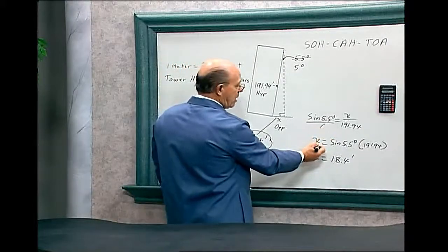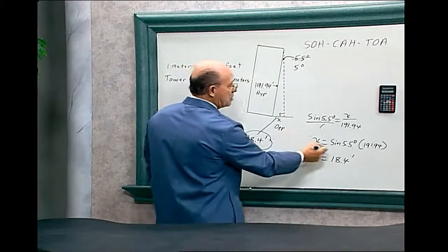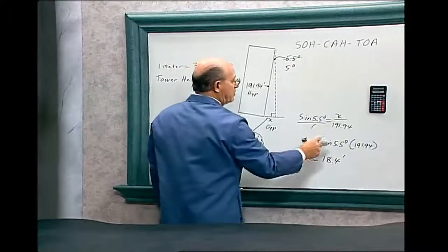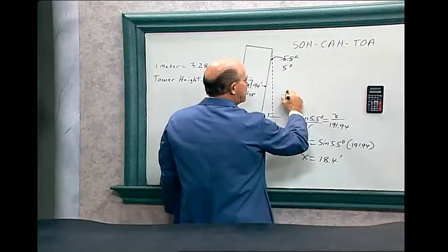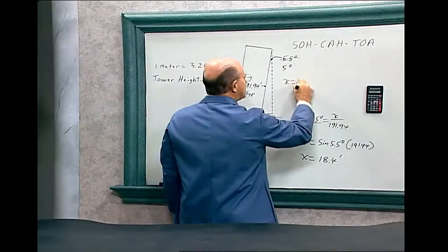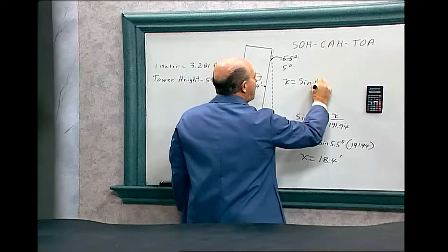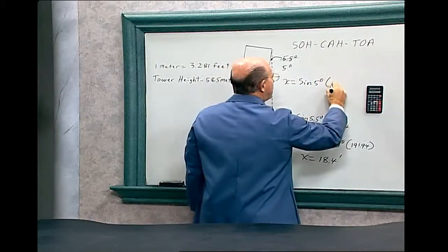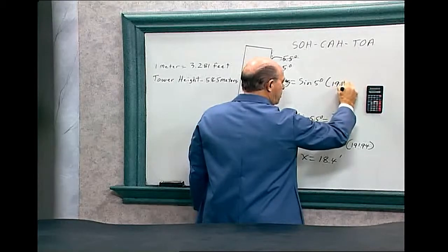Again we have the formula ready. X. It's the same X. We can use this formula. So all we have to do is x equals sine of 5 degrees multiplied by 191.94.